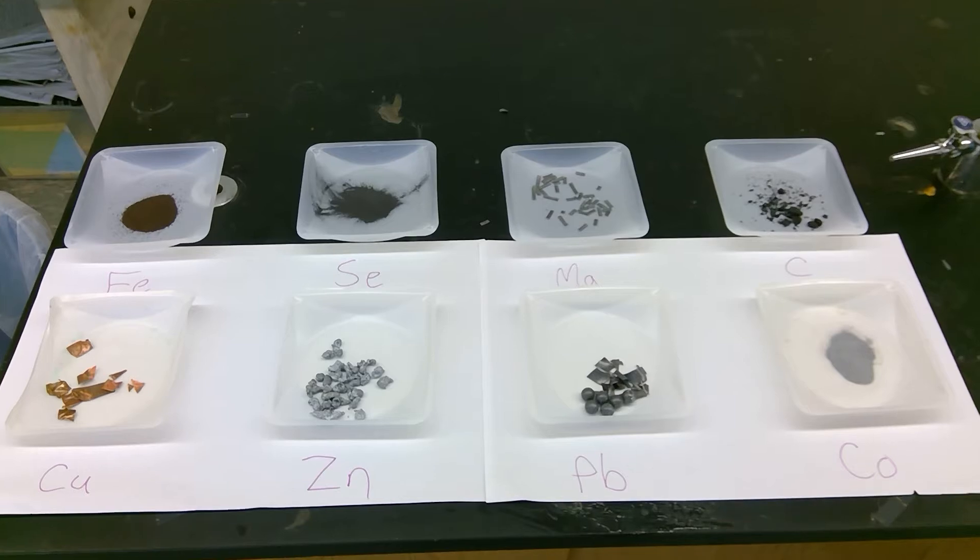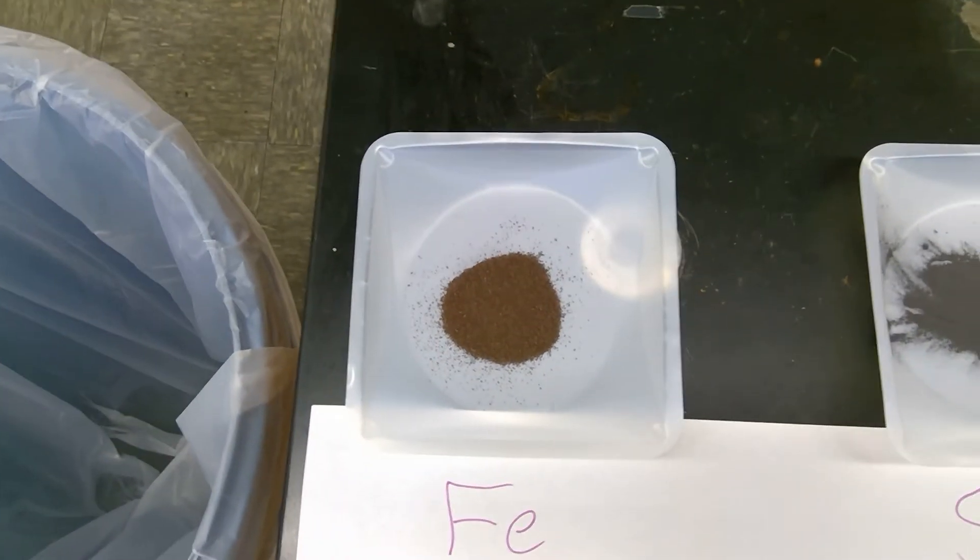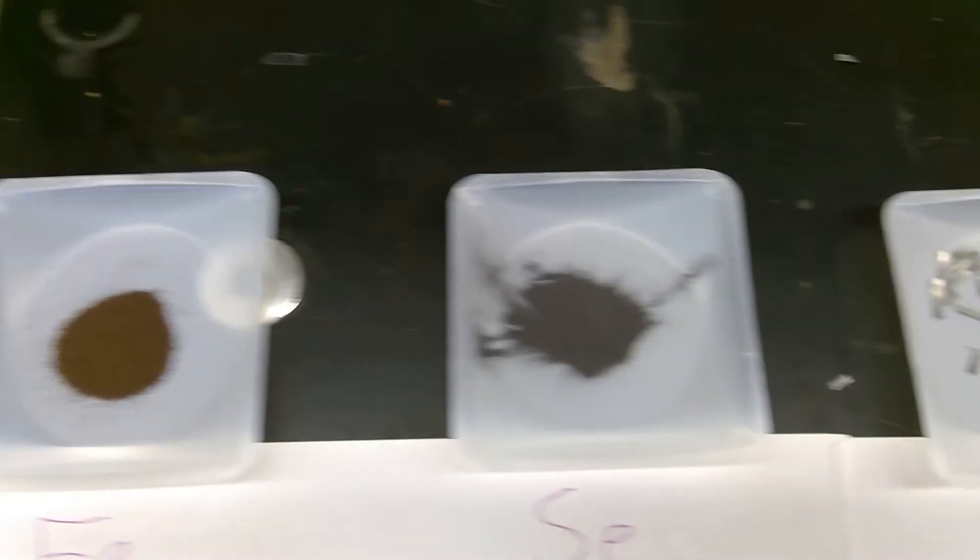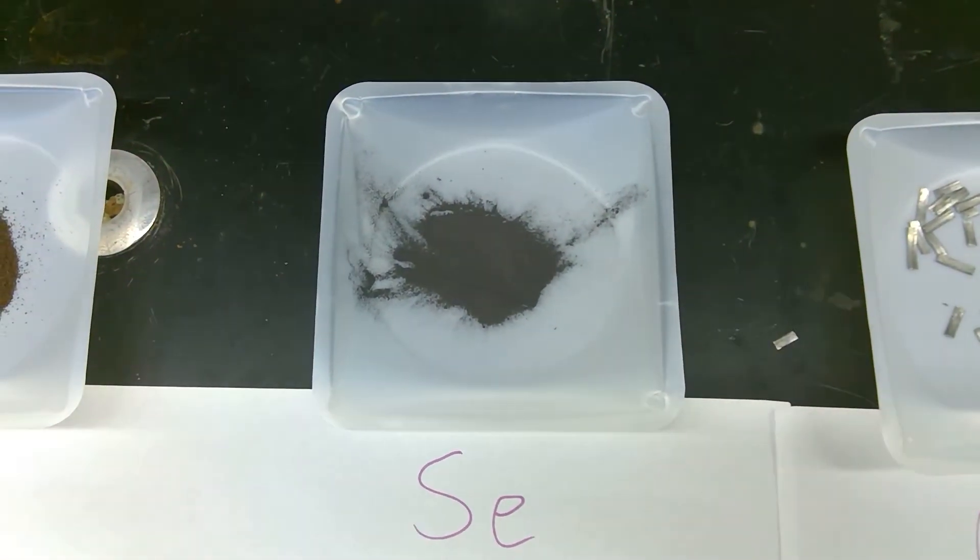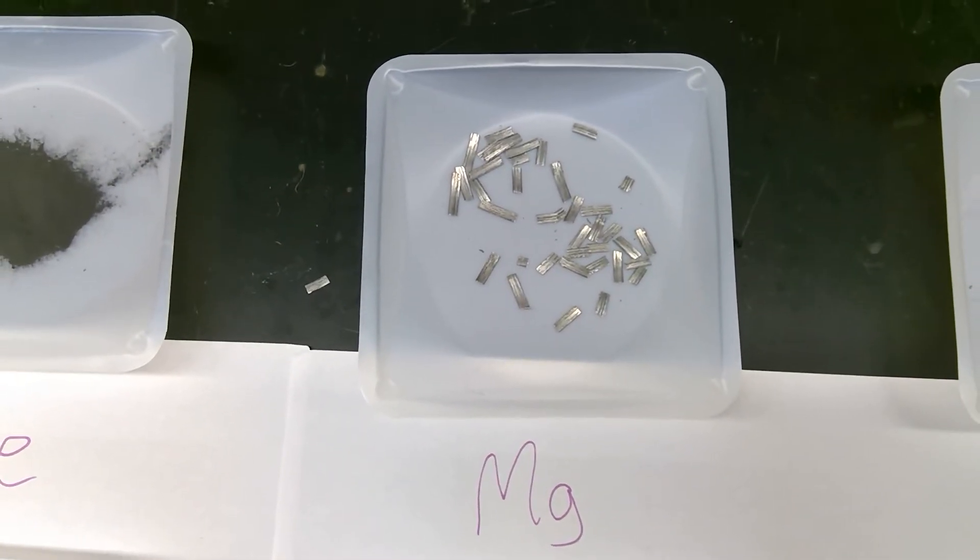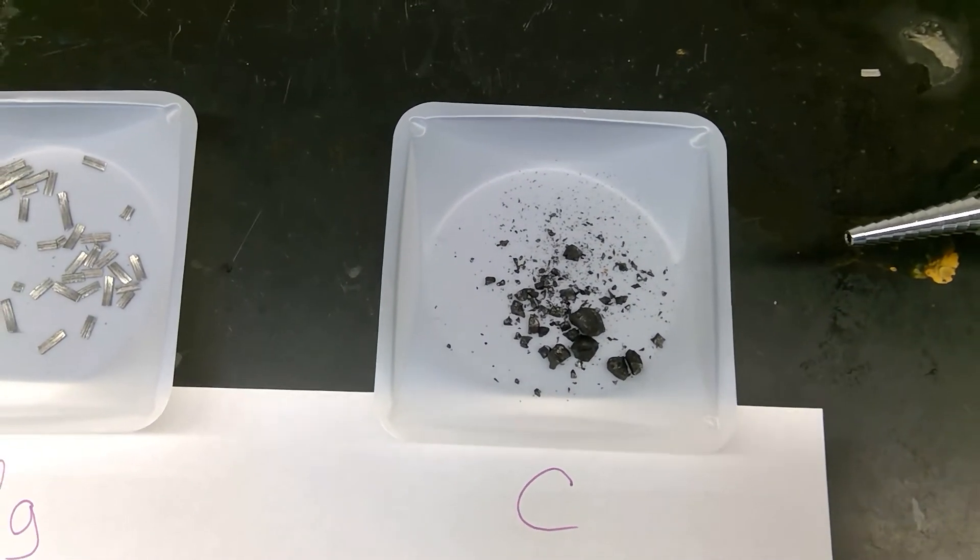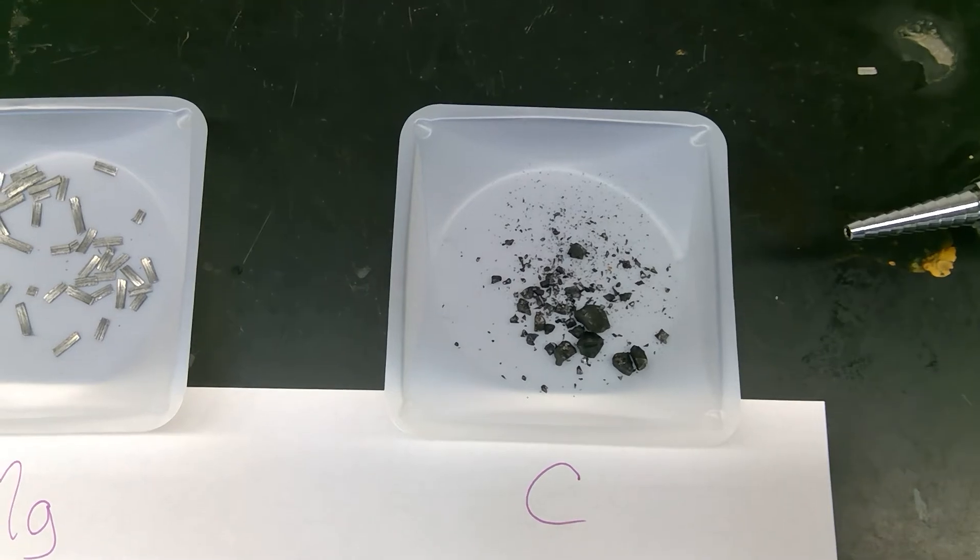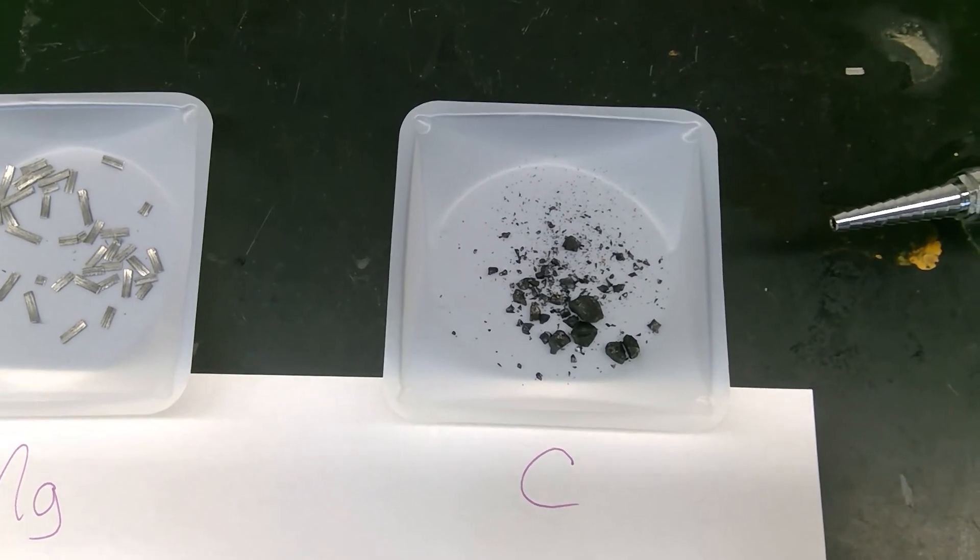So iron you see right here, selenium, magnesium, carbon—basically coal, but we're going to treat it as purely elemental. It's well over 90% pure carbon, so we're going to cheat a little bit on this one.